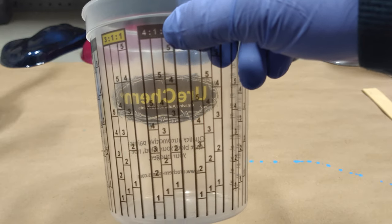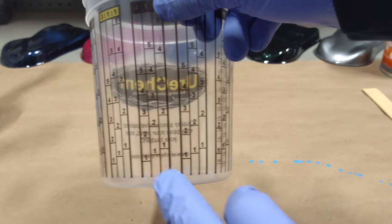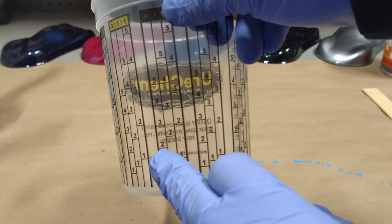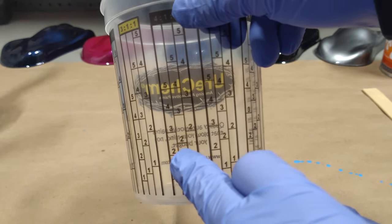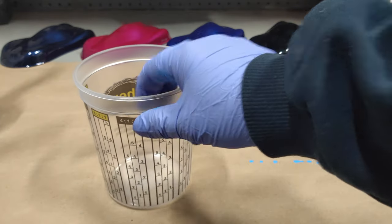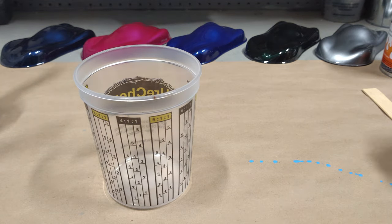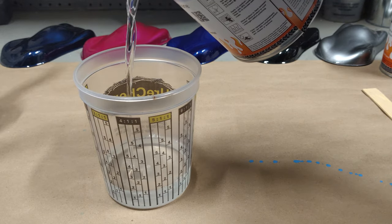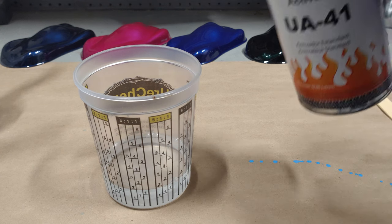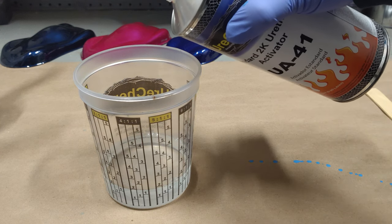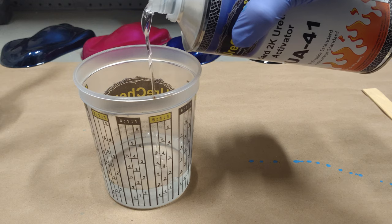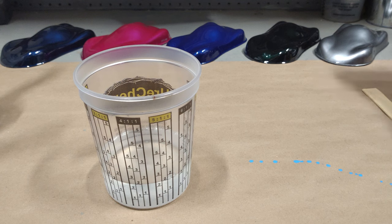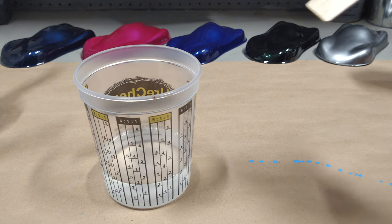So we're going to go four parts clear, one part activator. Again, we're going to just use the number two for today's example. So we're going to fill up to the number two with clear. Move over one row to the right. Again, up to the two with activator. Move over one row.